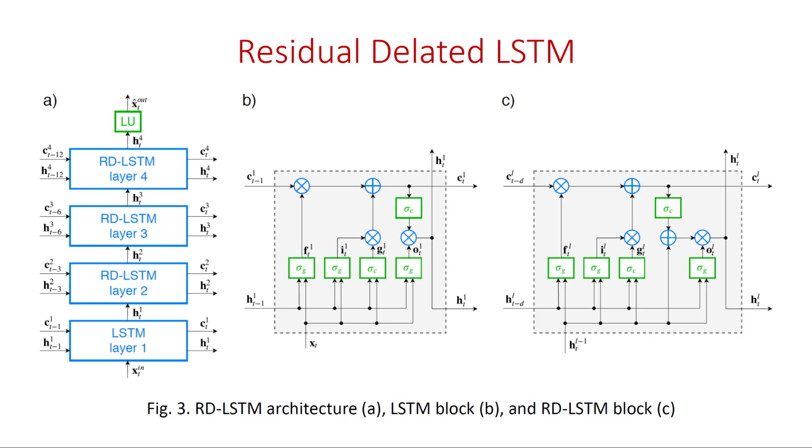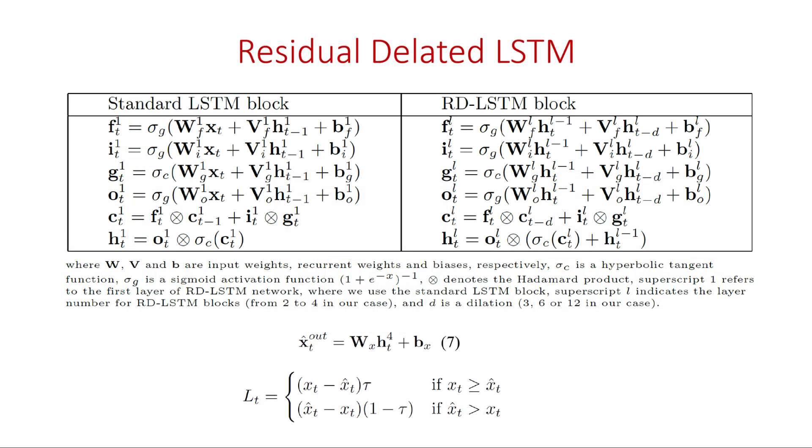Note that RDLSTM works on 12 component X vectors. It produces the forecasts for the whole yearly period receiving the previous yearly period as input. Equations describing the LSTM blocks are shown in the table. A linear unit LU transforms the output of the last layer into the forecast of the output X vector according to equation 7.